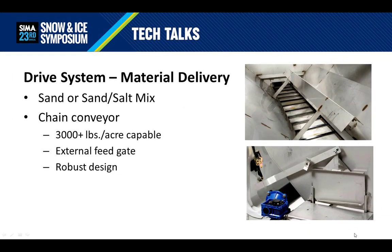What if the main material to be used is sand or a sand-salt mix? Then a chain conveyor system is the better choice for many reasons. First, this type of system is capable of outputting more than 3,000 pounds per acre. Second, the external feed gate helps limit the flow for slower speed and higher traffic areas. Third, the robust design of a conveyor system allows for a wide variety of materials such as gravel or other materials mixed in. We sometimes refer to this system as the Swiss army knife of spreaders. However, this system is more difficult to determine the application rate and wouldn't be ideal for trying to dial in industry best practices for salt and improving salt usage efficiency for your business.